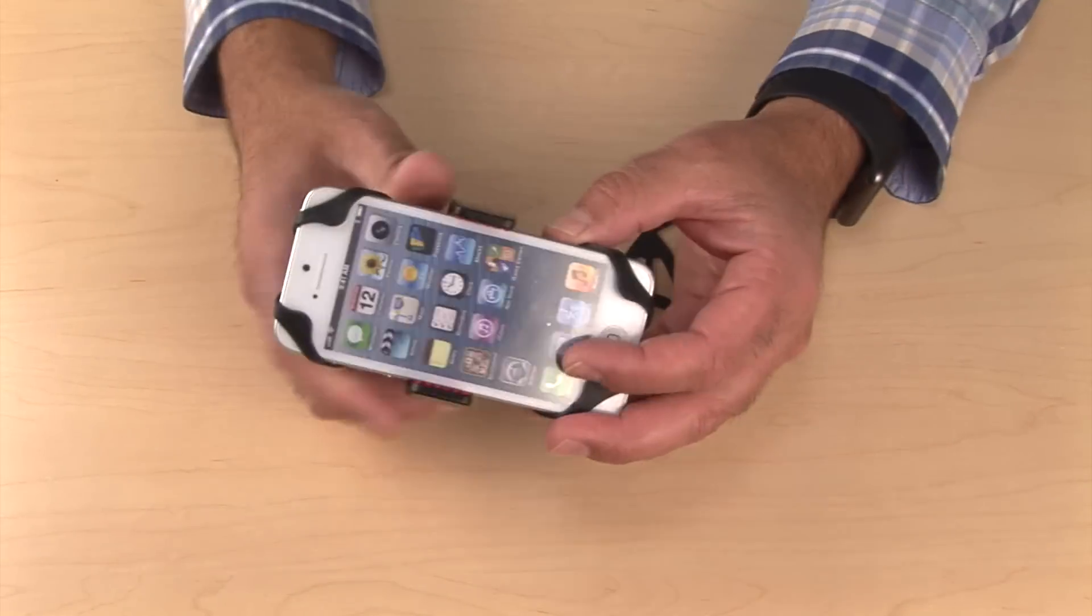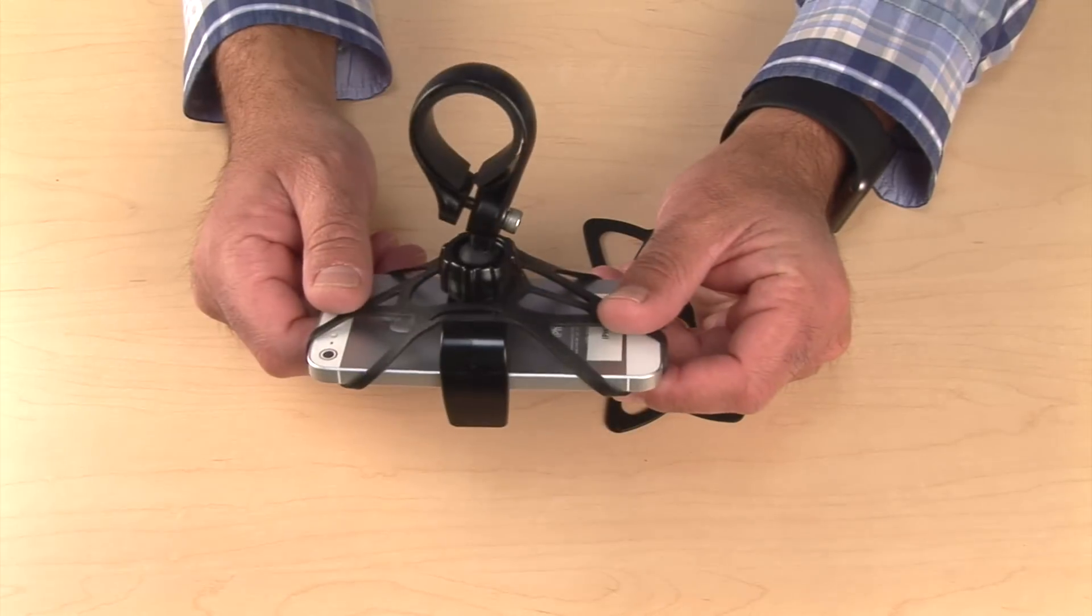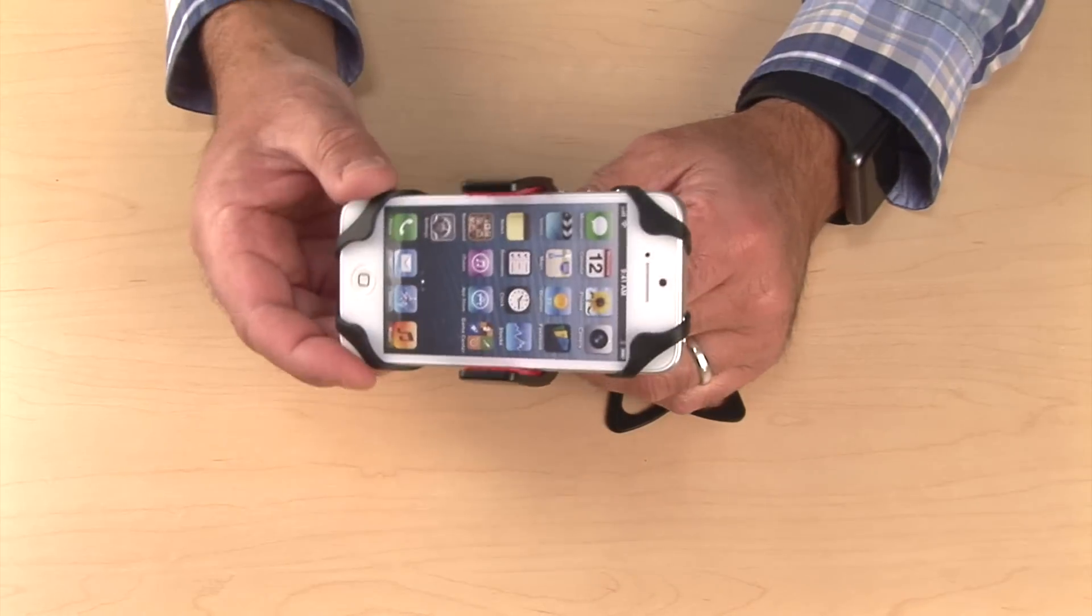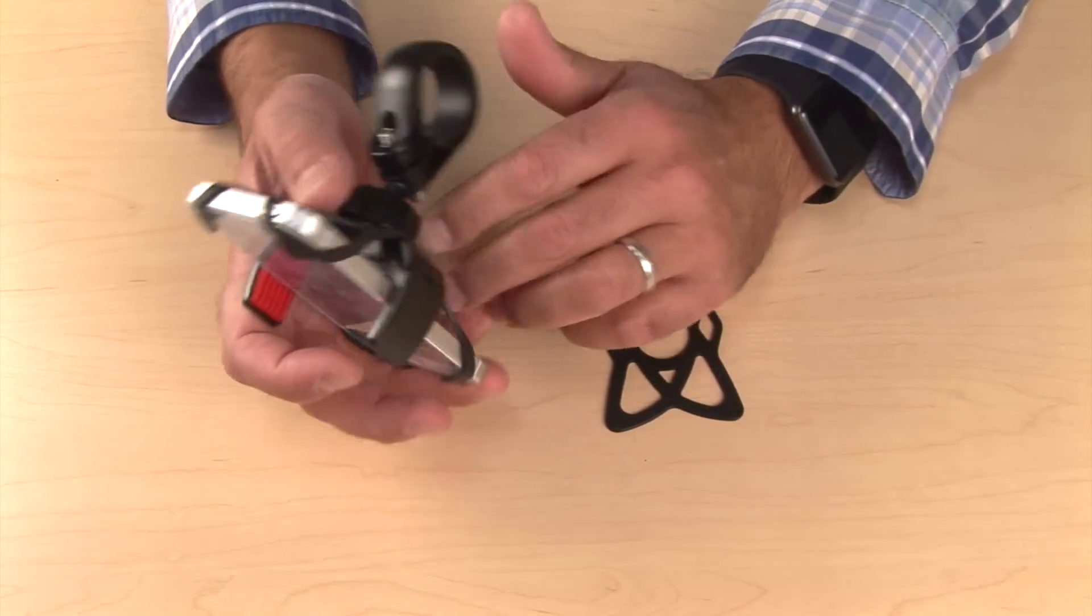And finally, in another example, I have just a simple mount here, that's a bike mount, and again, the web grip comes around the corners on the iPhone 5 and 5S.